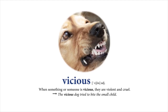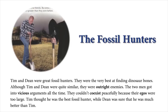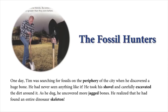The Fossil Hunters. Tim and Dean were great fossil hunters — the very best at finding dinosaur bones. Although Tim and Dean were quite similar, they were outright enemies. The two men got into vicious arguments all the time. They couldn't coexist peacefully because their egos were too large. Tim thought he was the best fossil hunter, while Dean was sure that he was much better than Tim. One day, Tim was searching for fossils on the periphery of the city when he discovered a huge bone. He had never seen anything like it.